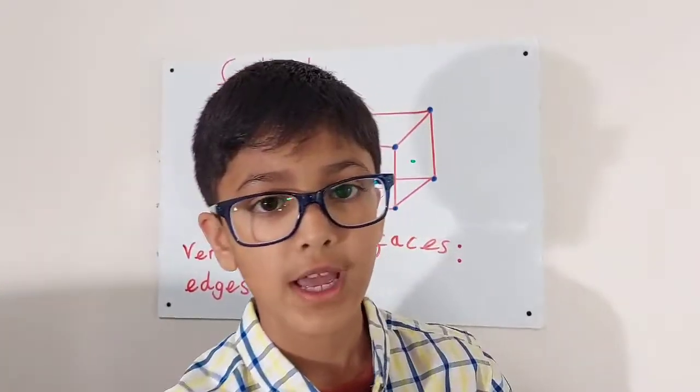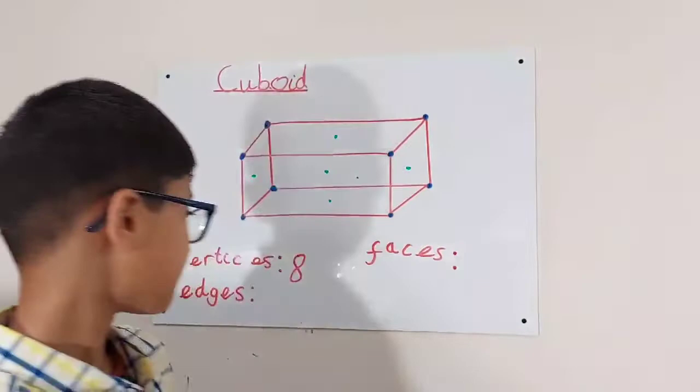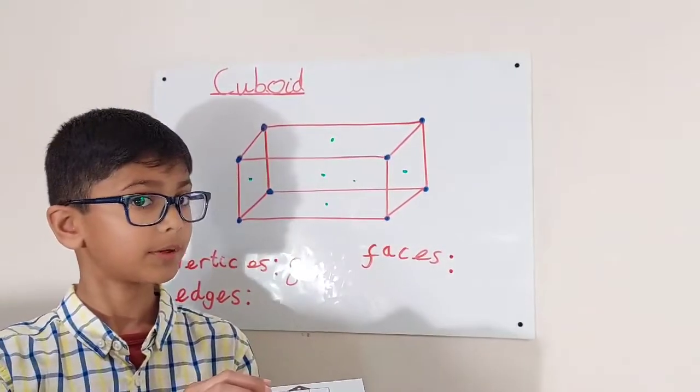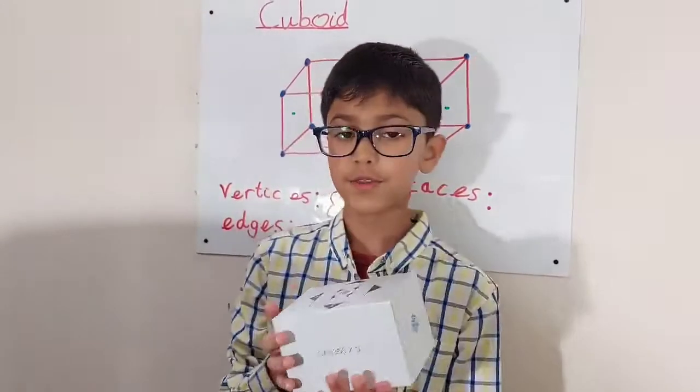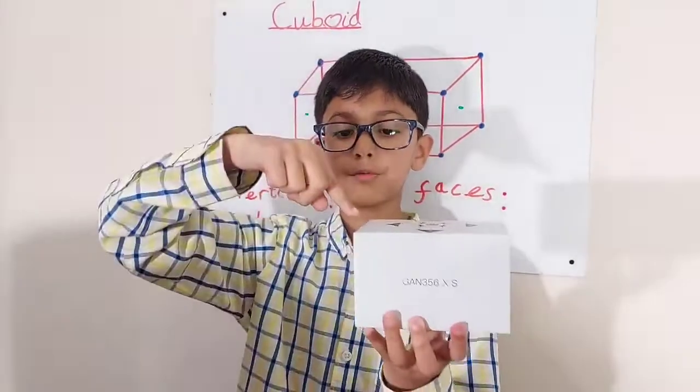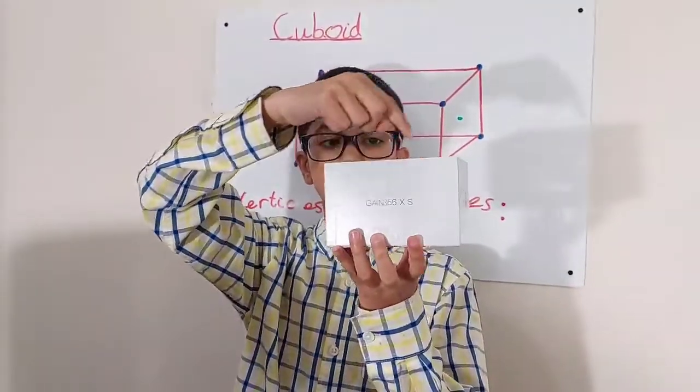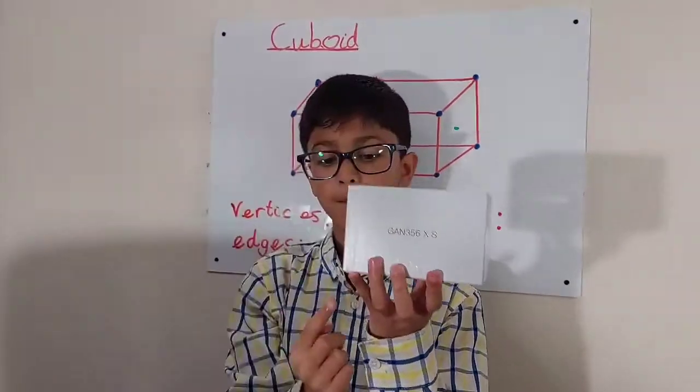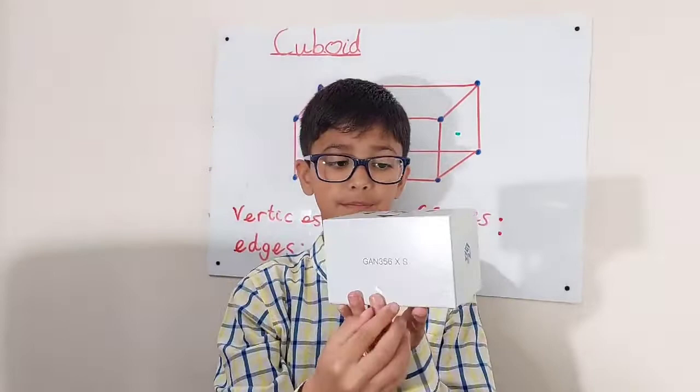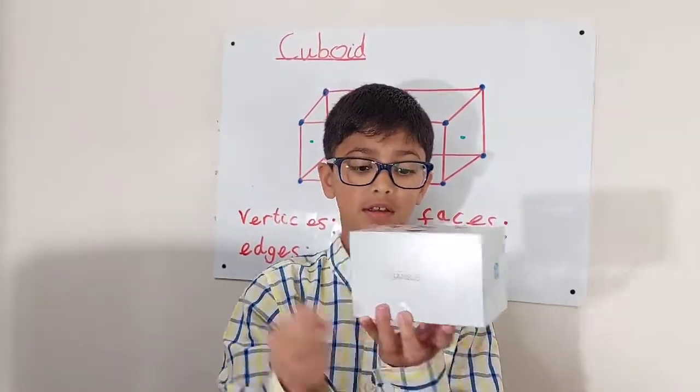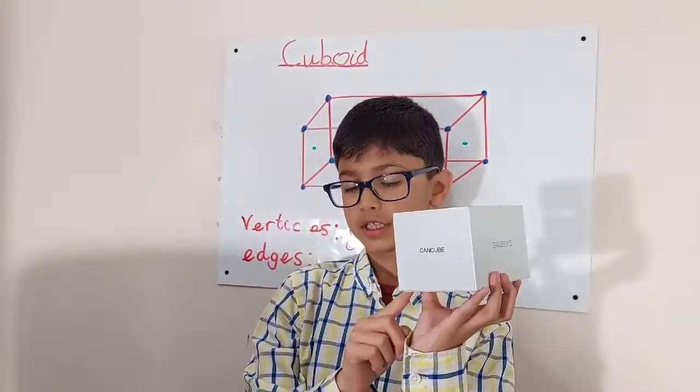Now for edges we have got, remember what the edges are, the red ones. So for edges we have got one, two, three, four, five, six, seven and then eight on the back.